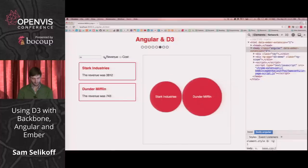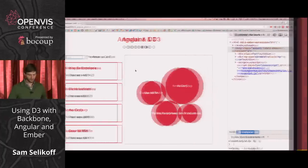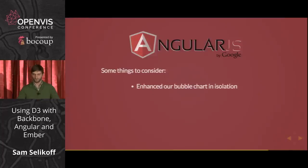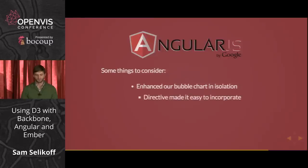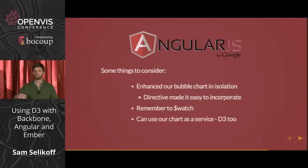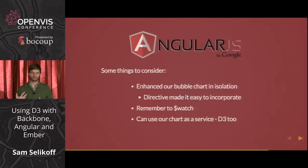Some thoughts about Angular: we enhanced our bubble chart in isolation — it doesn't know about Angular or any concepts of filtering. It's its own reusable thing. The directive made it easy to incorporate. You have to remember to watch the different properties so all your dependencies stay in sync. There's also something in Angular called services, which lets you inject objects that your controller or other objects need — you can even use your chart as a service, or D3 itself, instead of instantiating it within the directive.